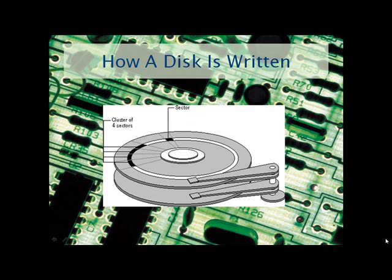But how does it write the data? It writes the data to specific points on the disc. These specific points are called sectors. The arm is moved to the correct location, and as the sector passes under the head at a very high speed, magnetic information is either read or written. You'll also notice on this slide: clusters. A cluster is the term for a group of sectors.